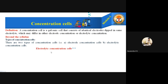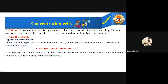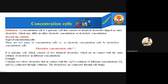In our syllabus, we have only the electrolyte concentration cell. It is also a three-star question — the most important question for the exam. The electrolyte concentration cell has identical electrodes and the same electrolyte, but the concentration of the electrolyte differs. It is a galvanic cell in which two identical electrodes are in contact with the same electrolyte solution in different concentrations. For example, consider two silver electrodes in contact with silver nitrate solution of different concentrations, M1 and M2, connected through a voltmeter. The electrolytes are connected through a salt bridge.